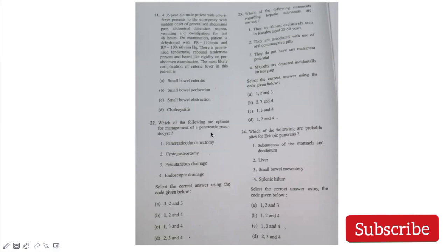Which are used for management of pancreatic pseudocyst? For pseudocyst management, we do cystogastrostomy - connecting the cyst to the stomach to let it drain. Or we can do percutaneous drainage with pigtail catheter. Endoscopic drainage can also be done. But pancreaticoduodenectomy, such a morbid surgery, is not required. Which statements regarding hepatic adenomas are correct? Commonly seen in females 25 to 50 years - yes. Associated with OCPs - yes. They have no malignant potential - no, they actually have malignant potential. Majority detected incidentally on imaging - yes. Answer is 1, 2, and 4.